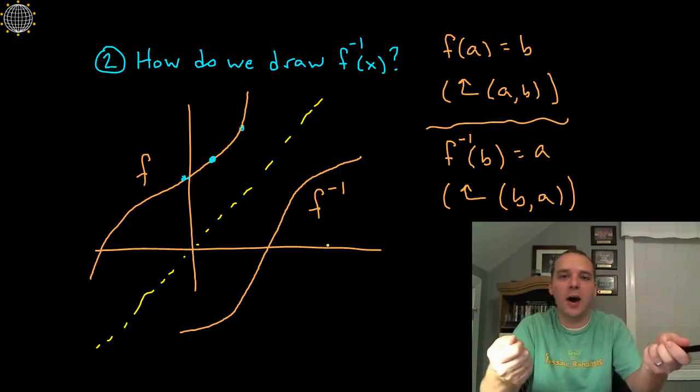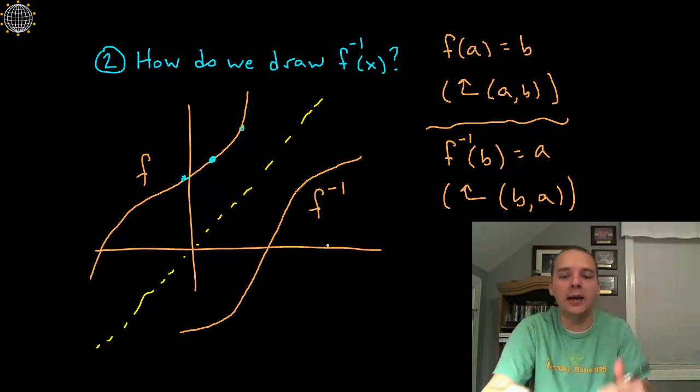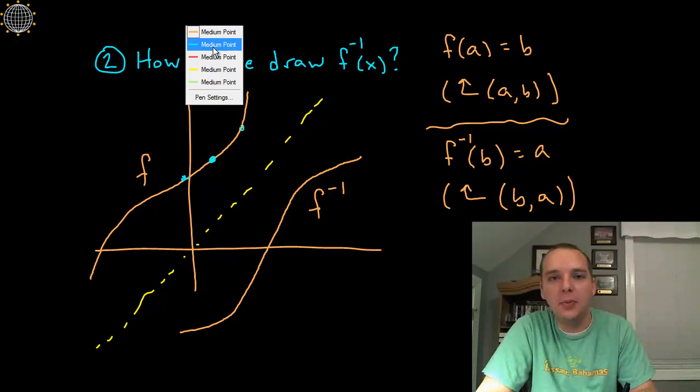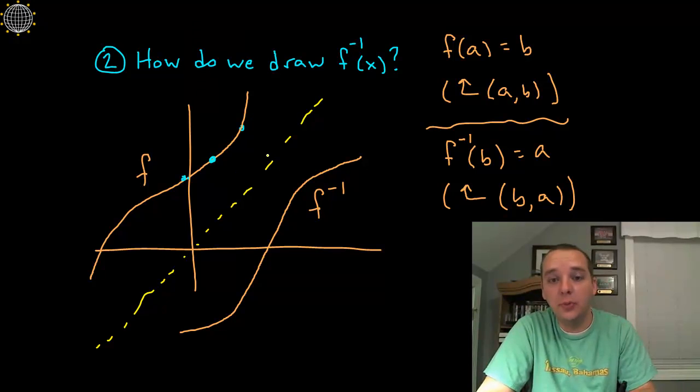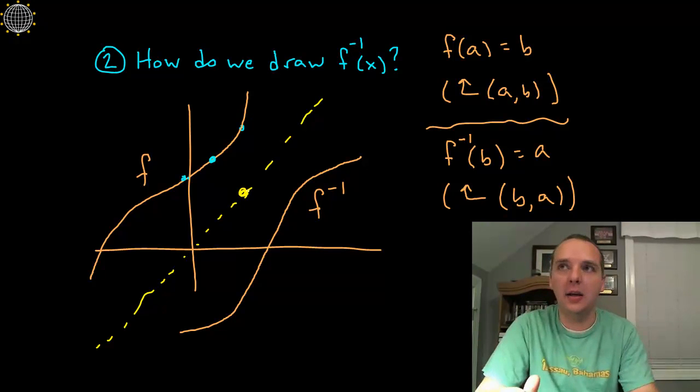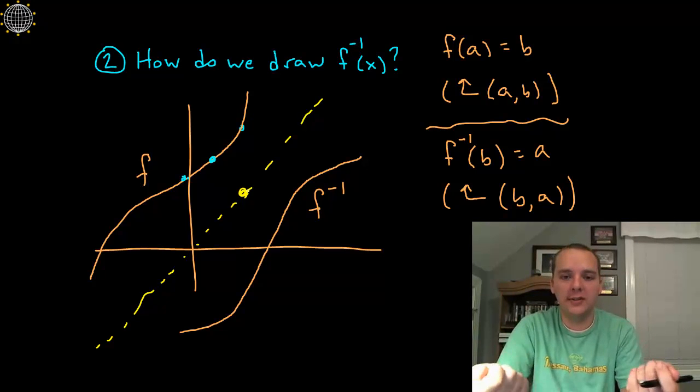Because in effect you're taking (x,y) and plotting (y,x). Now what would happen to any point that goes through this line y equals x right here? Well it would actually be like a pivot point if you will. Well the point (4,4) would stay (4,4), I mean that's certainly true.